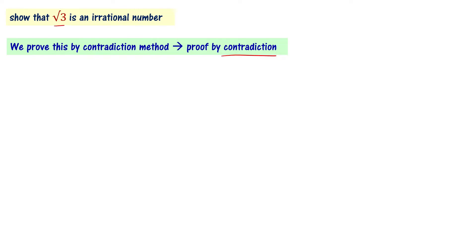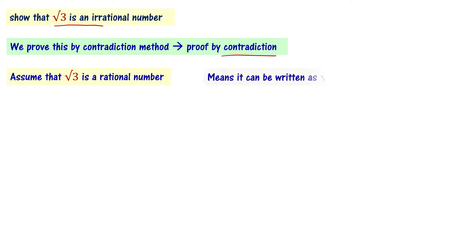Assume root 3 is a rational number — but this leads to a contradiction. Let's assume root 3 is a rational number. A rational number can be expressed as a ratio of two integers. So let root 3 equal to r by s, where r and s are two integers.